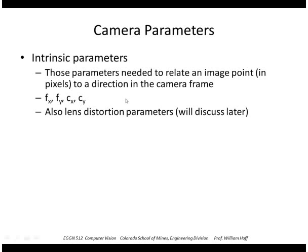Instead of expressing focal length in pixels, we could express it in millimeters, but then we would need to know the size of a pixel in millimeters. Also, a little later we're going to look at lens distortion parameters, where we can't use the simple pinhole camera model — we'll talk about that later in the course.